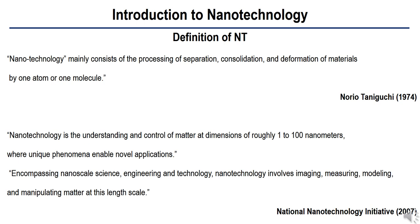The Interagency Subcommittee on Nanoscale Science, Engineering and Technology of the U.S. Federal Office of Science and Technology Policy defines nanotechnology as research and technology development at the atomic, molecular, or macromolecular levels, involving devices and systems that have novel properties and functions because of their small or intermediate size. The novel and differentiating properties and functions are developed at a critical length scale typically under 100 nanometers. According to the Royal Society of the UK, nanotechnology is the production and application of structures, devices, and systems by controlling shape and size at the nanometer scale.